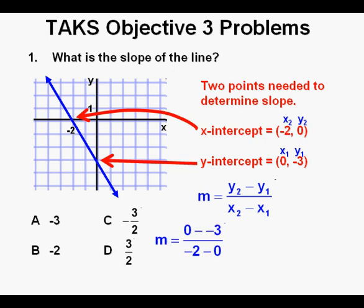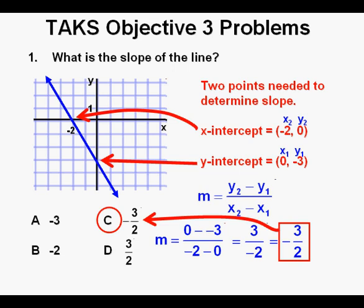Next, we place the values into the slope formula, and they are 0 minus negative 3 over negative 2 minus 0. And that becomes 3 over negative 2, which equals negative 3 over 2. And that is our answer, C.